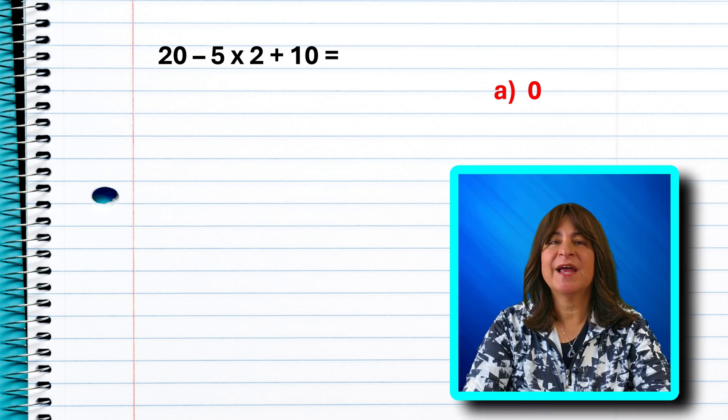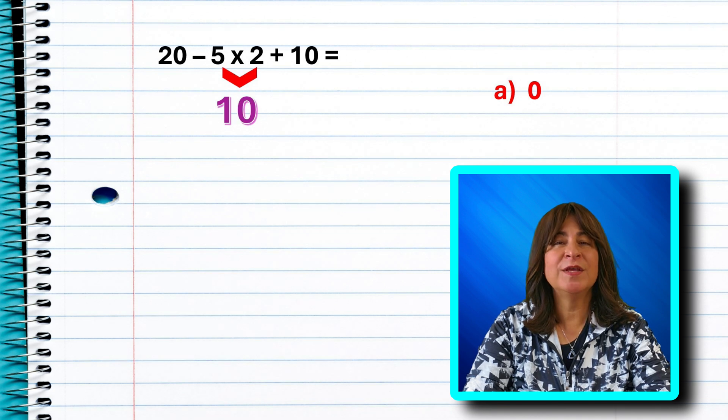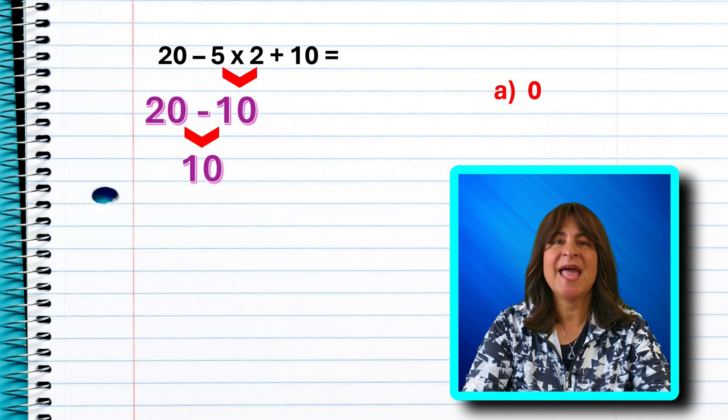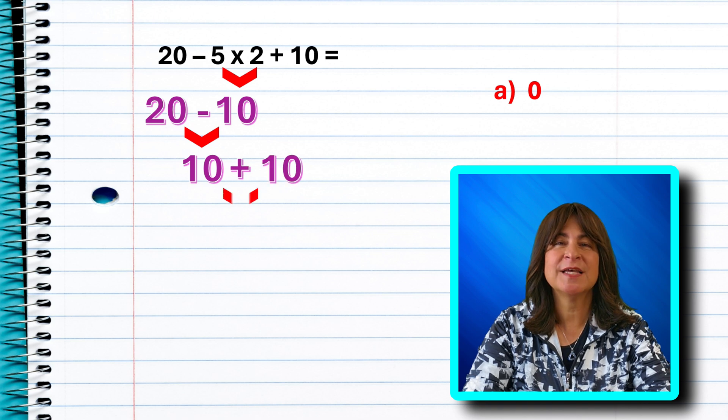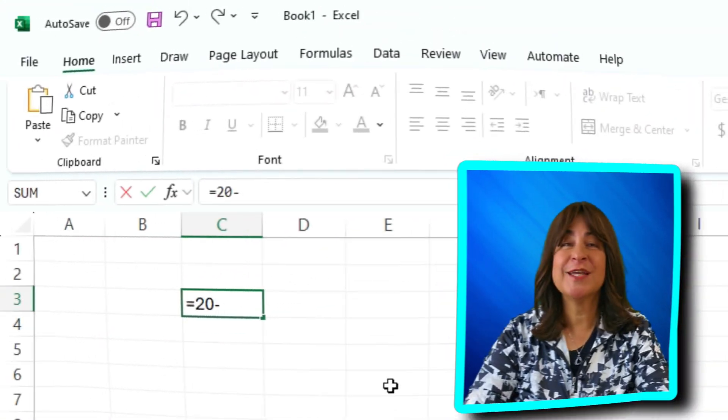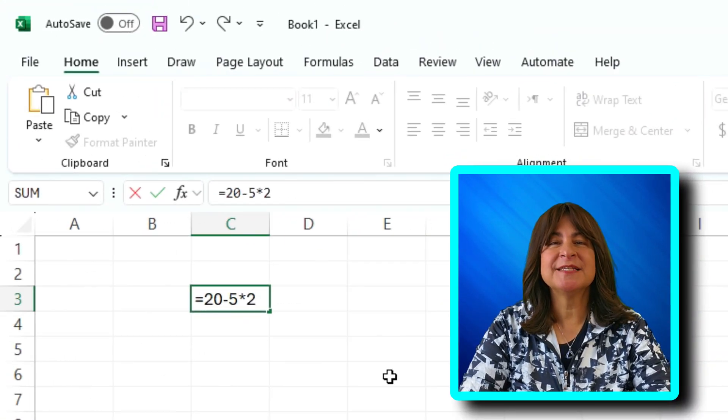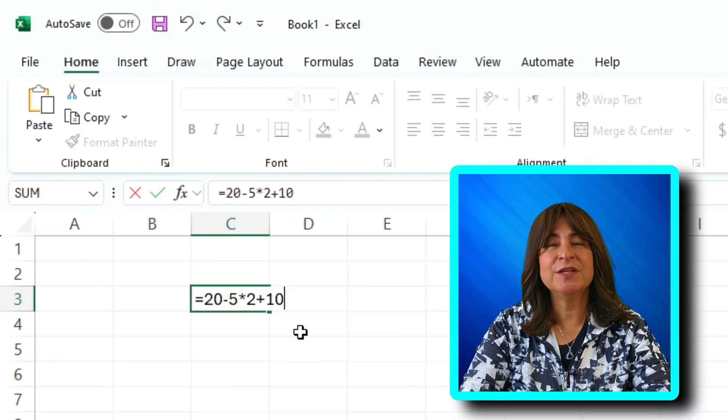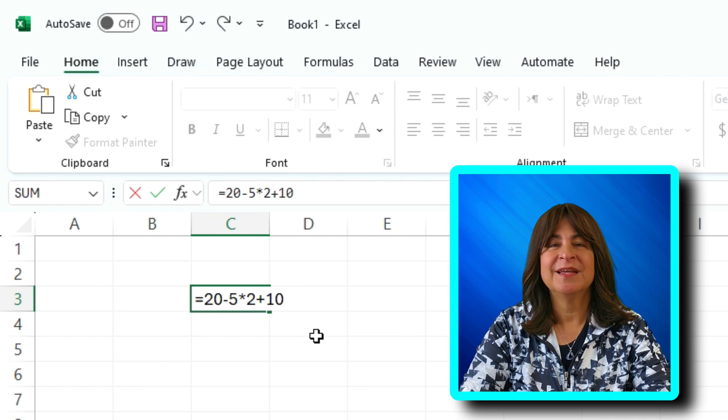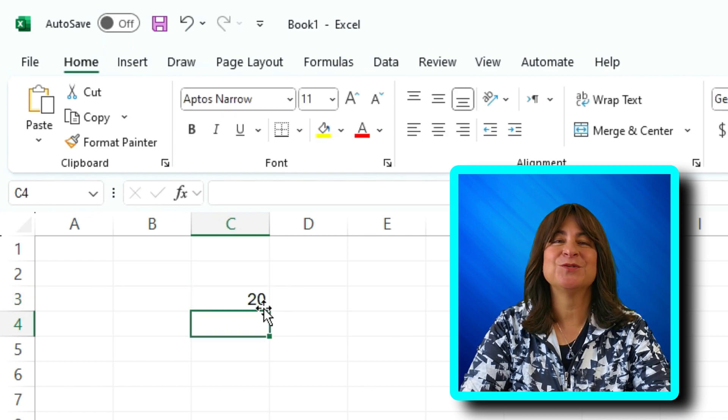All right, let's do this the proper way. We're just thinking of addition and subtraction as equal except reading from left to right for the order. So of course, multiplication is a higher order. So again, 5 times 2 is 10. And now reading from left to right, 20 minus 10 is 10. And then we add. So now 10 plus 10 is 20. So now we get 20, which is the correct answer. Just for kicks again, let's put this into Excel and see if it knows how to get the right answer. And yes, we get 20.